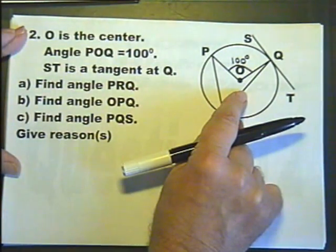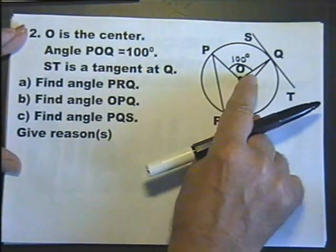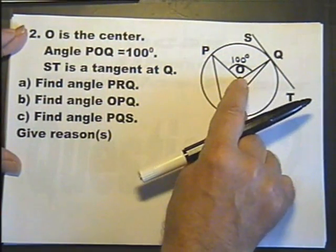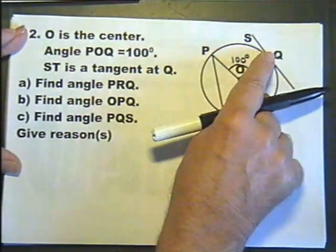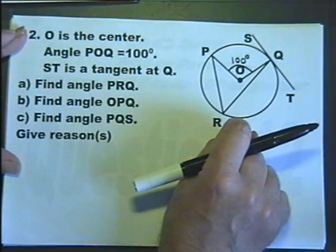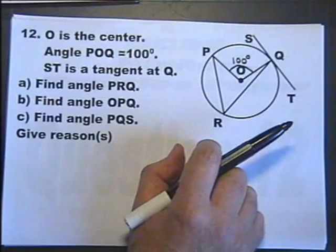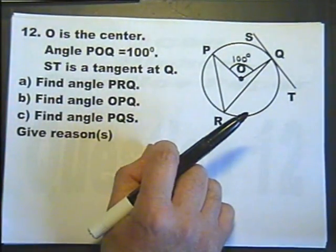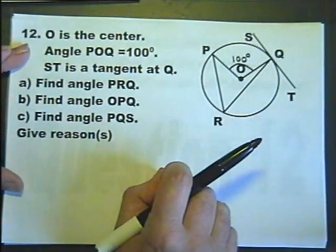Before reading the questions, let's look at what we've got. I've got two radii there, so they're the same length. Triangle OPQ is an isosceles triangle. This is a tangent and a radius. The angle between a tangent and a radius is always 90 degrees. Maybe the question's got something to do with that. Sometimes when you do circle theorem questions, it's worth thinking about the diagram before you even read what you've got to find. Let's jump into the question.